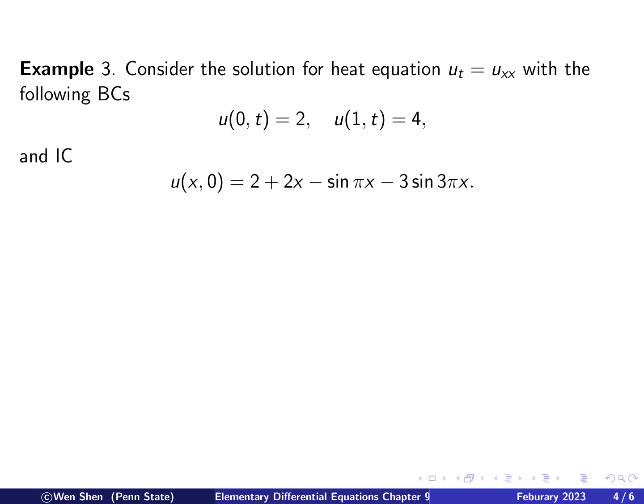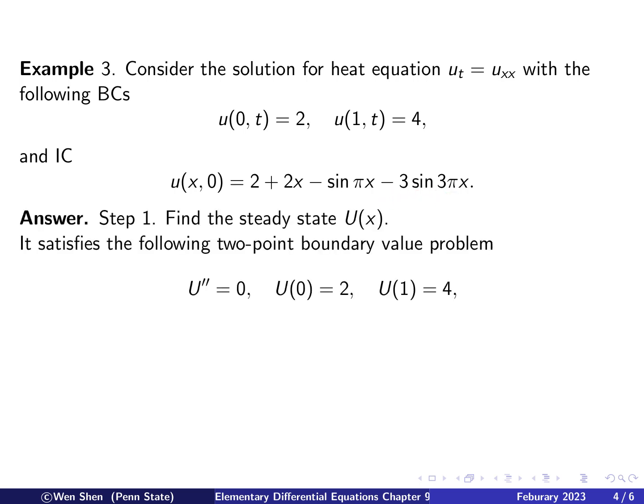And then initial condition is given, and that is 2 plus 2x minus sine pi x and minus 3 sine 3 pi x. Okay, so the steps here are a little bit different now. We first find the steady state as we have discussed, because that's important. So the steady state will be capital U: U double prime is 0, and U at 0 is 2, and U at 1 is 4.